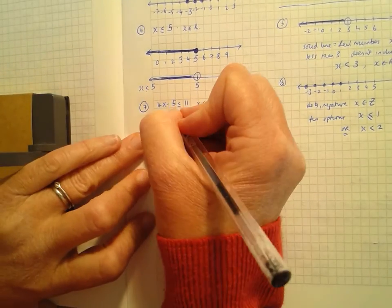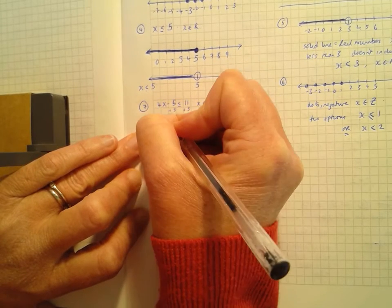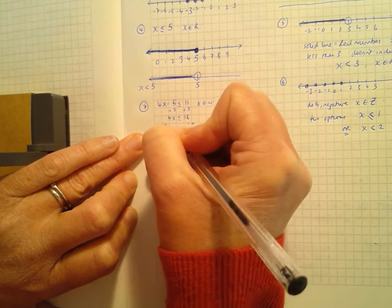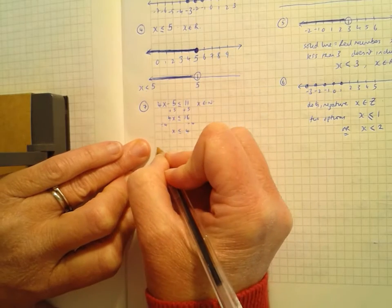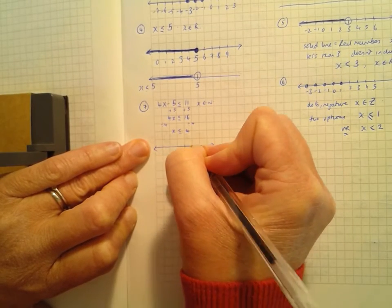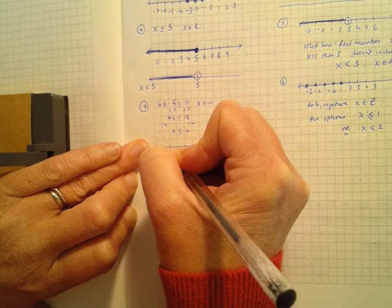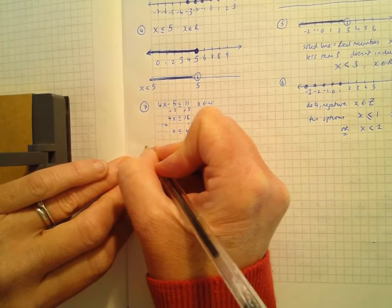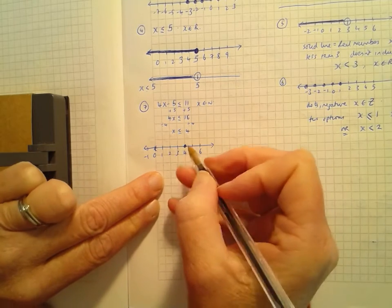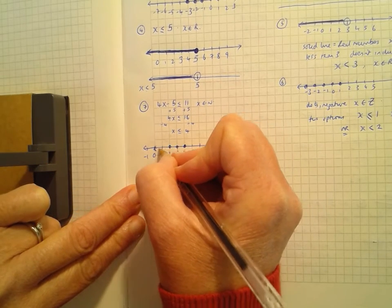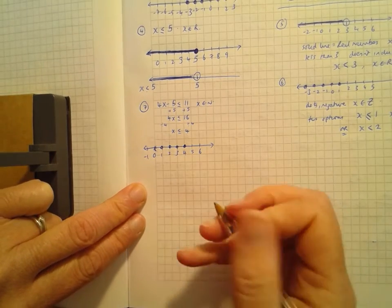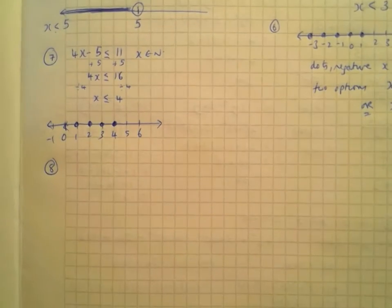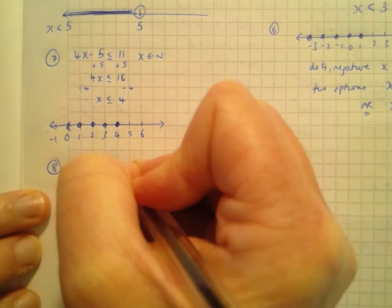Example 3: x ≥ -3, x ∈ Z. Z is integers — positive and negative whole numbers. Put -3 in the middle of the number line. x is greater than or equal to -3, so we include -3. Since it's integers, we put dots on each of the whole numbers. The arrows at either end mean it goes on forever.